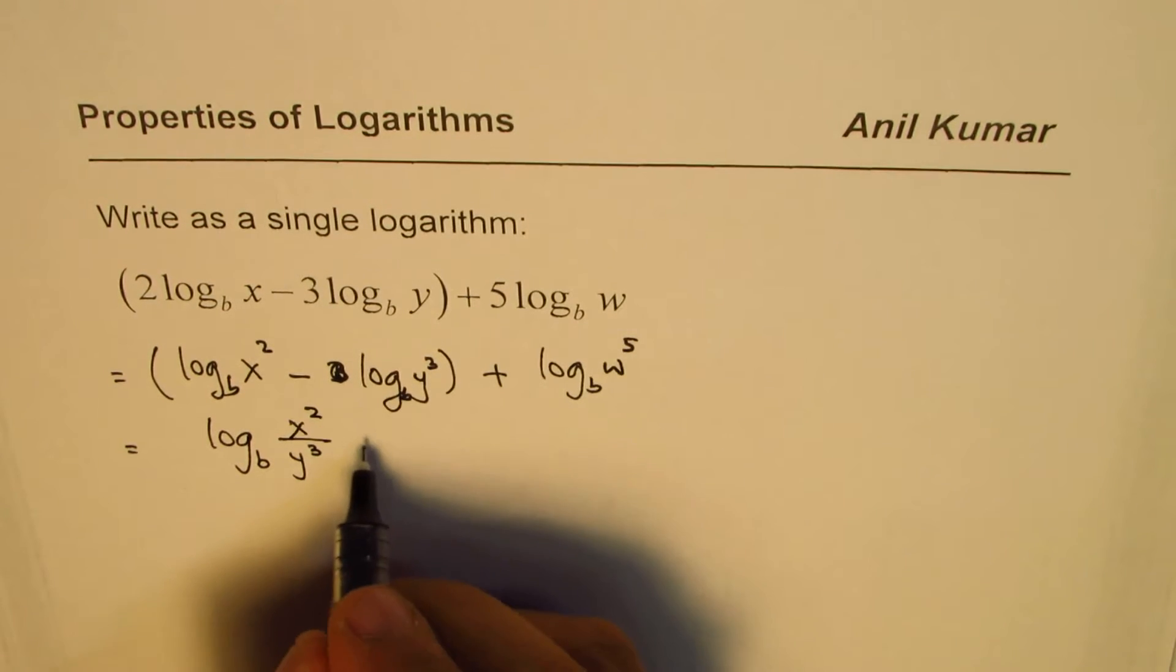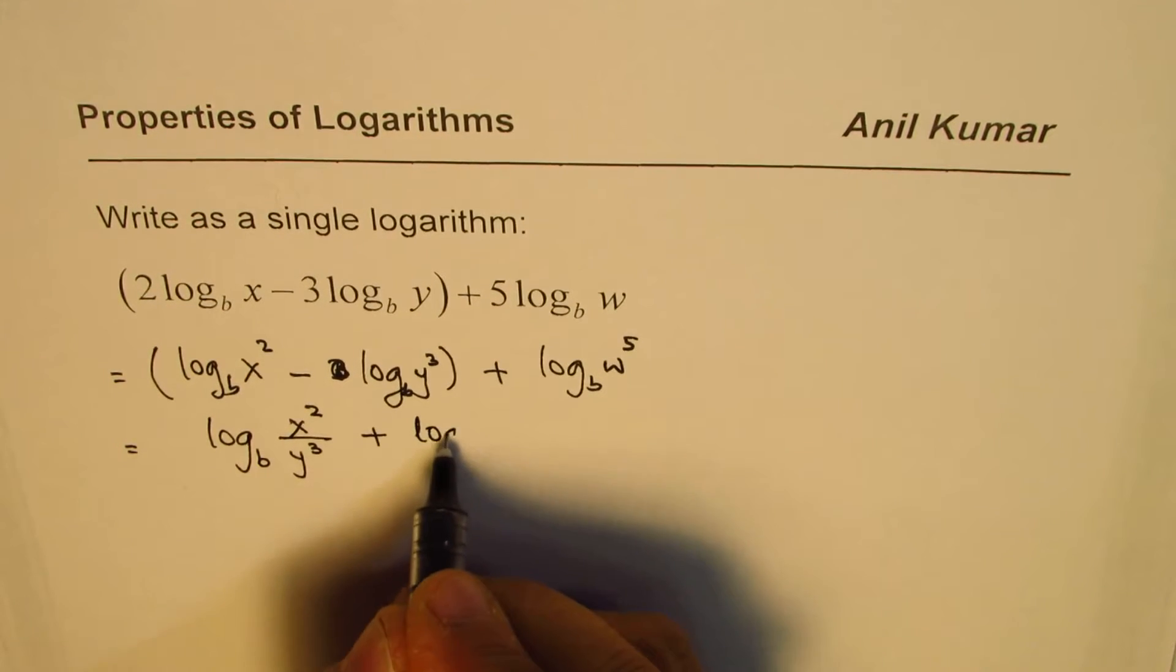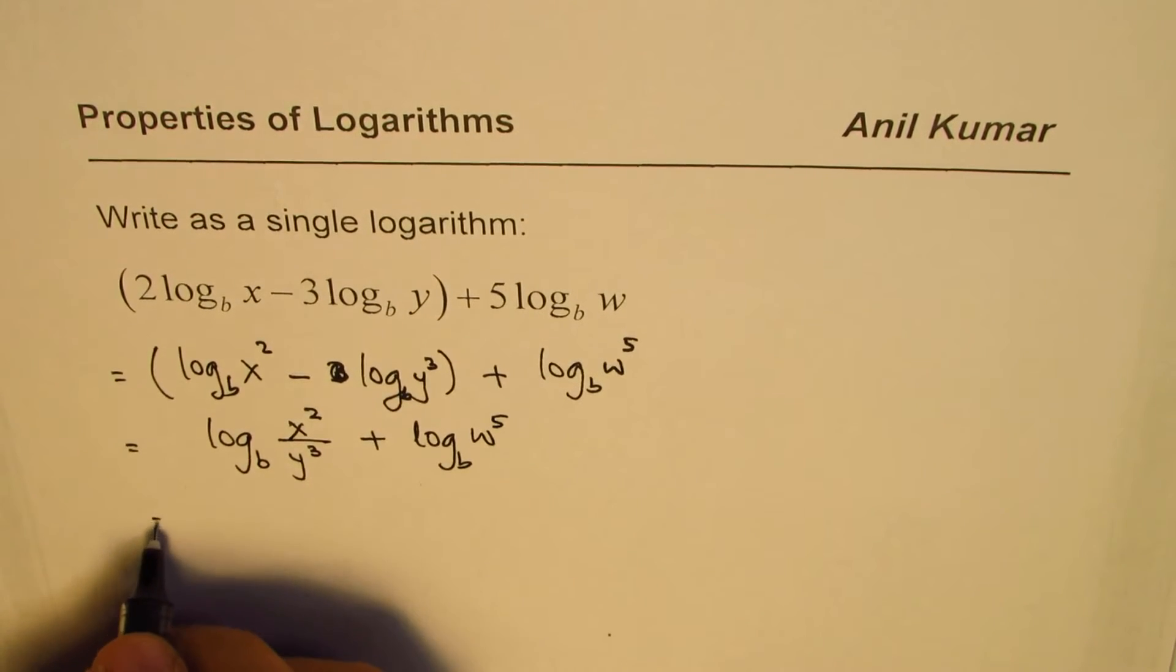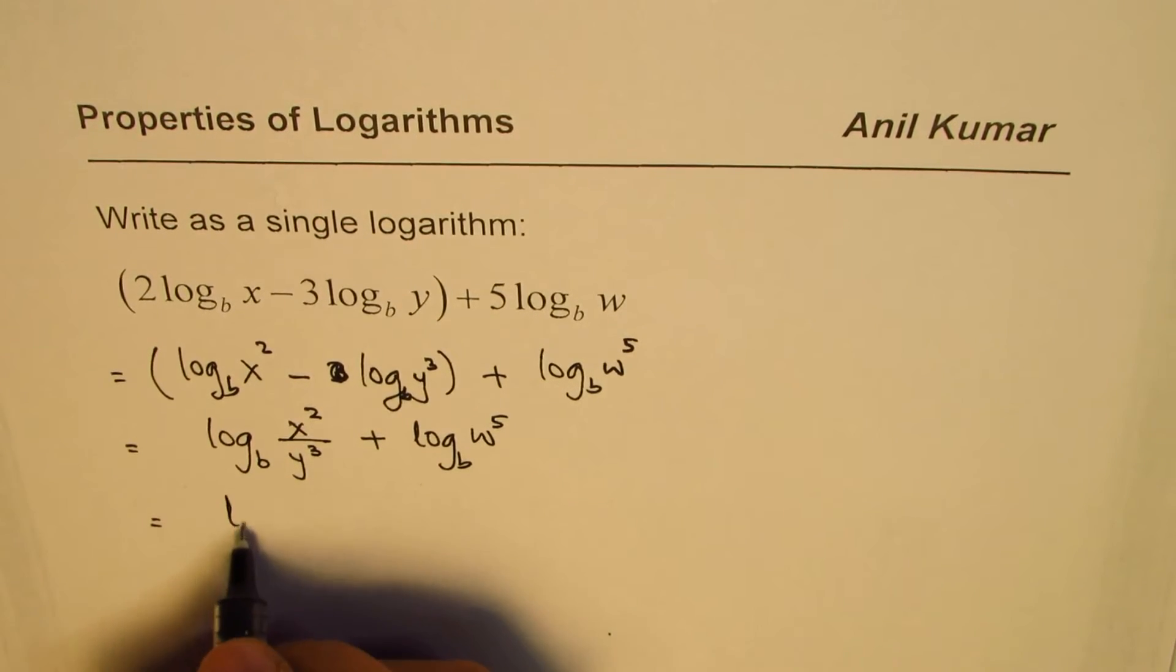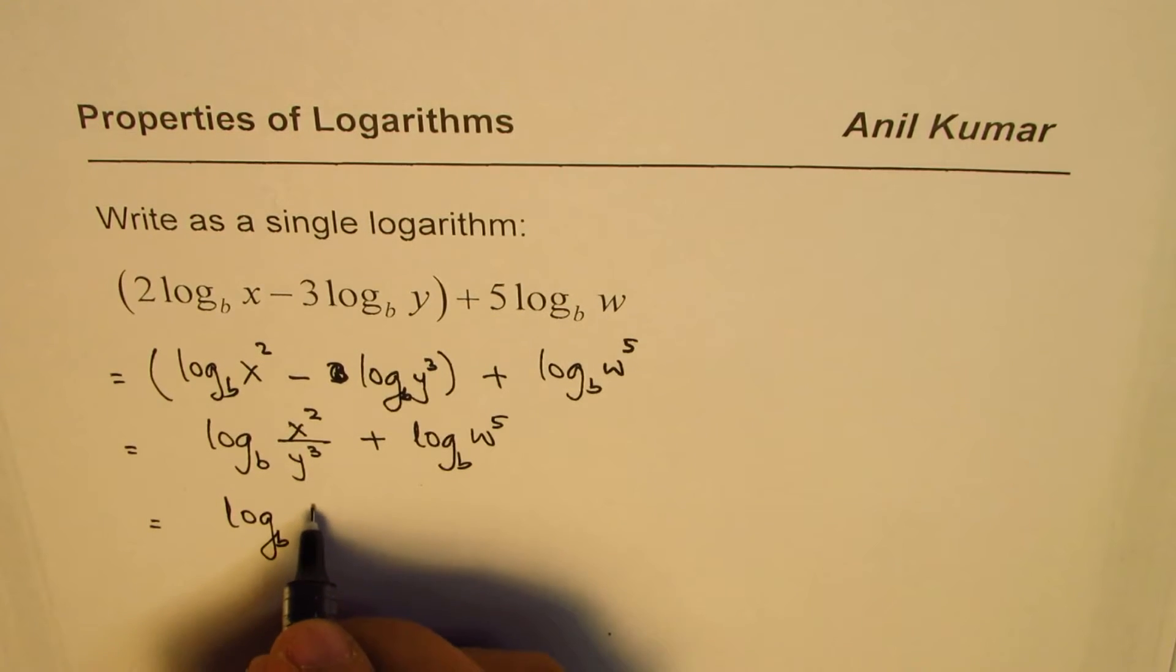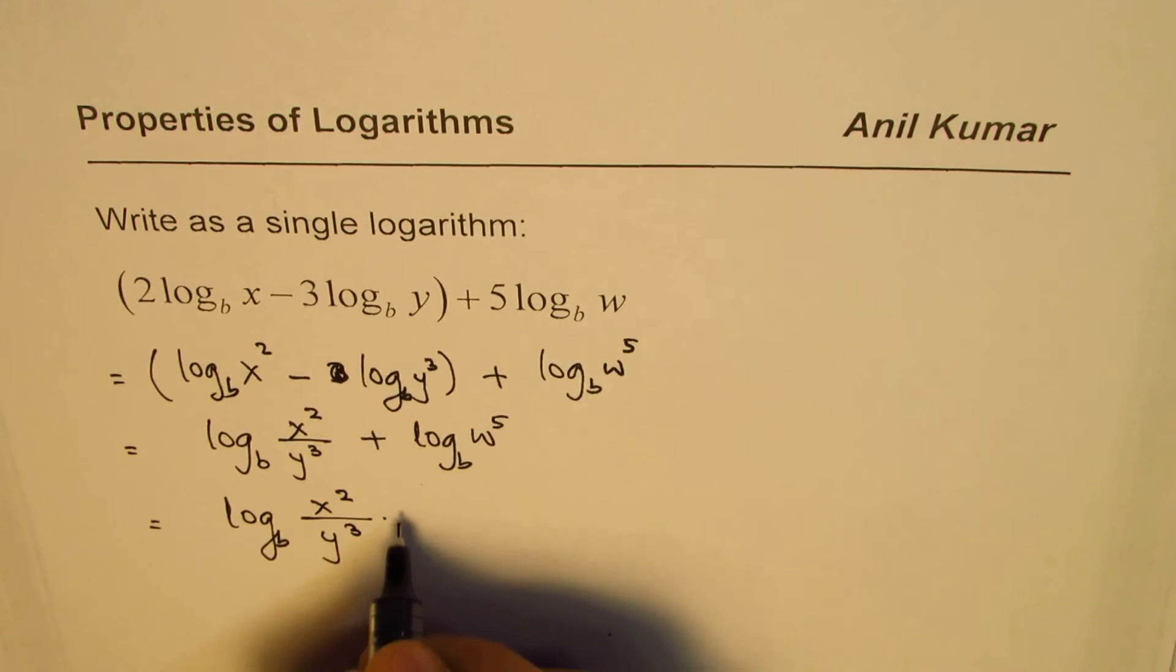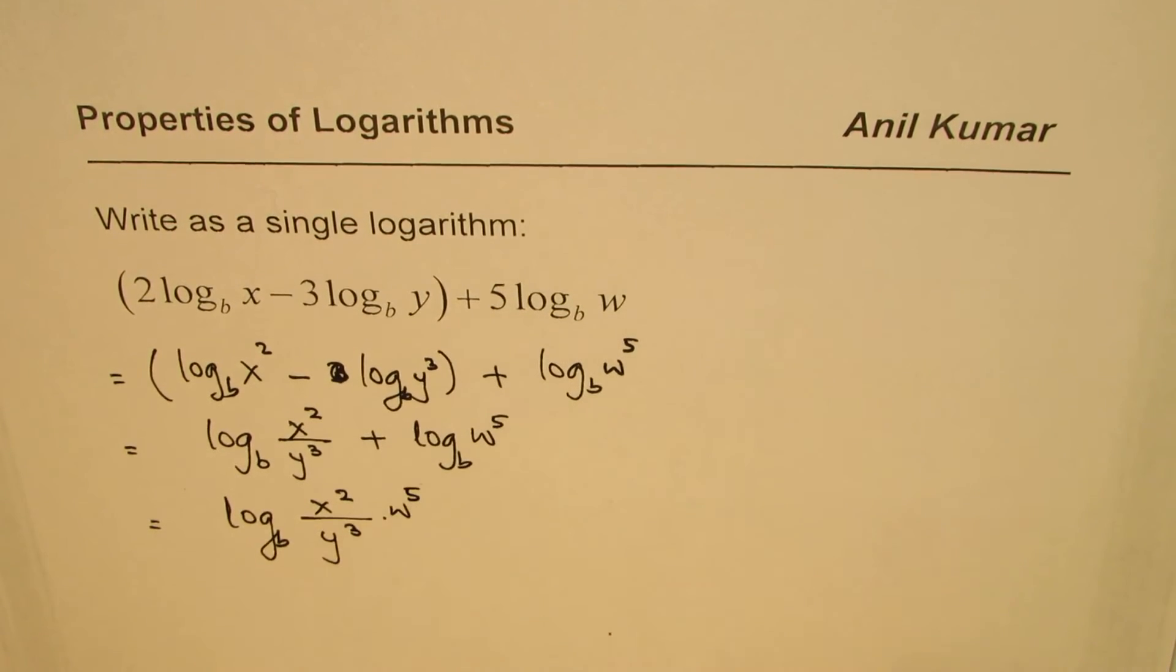And then we are saying plus log to the base b of w to the power of 5, so that could be written as a product. So we could write this as log to the base b of x squared over y cubed times w to the power of 5. Correct? So that becomes our single logarithm for the given expression.